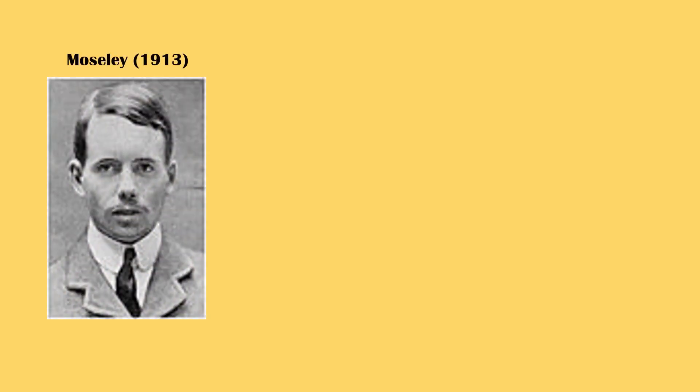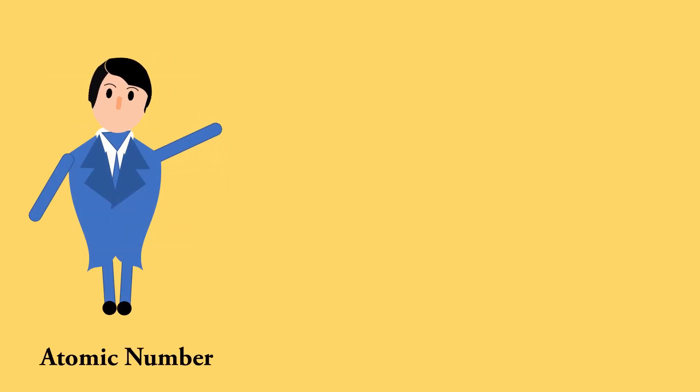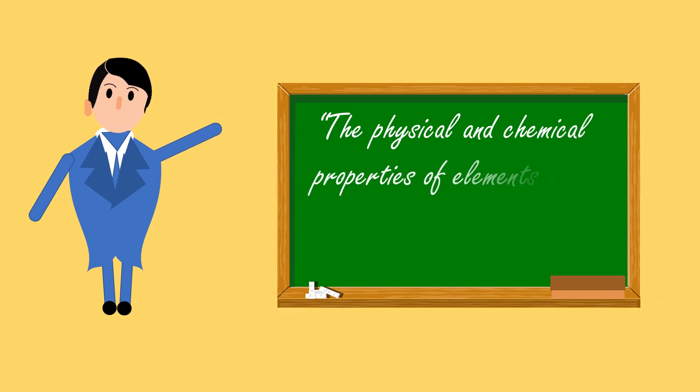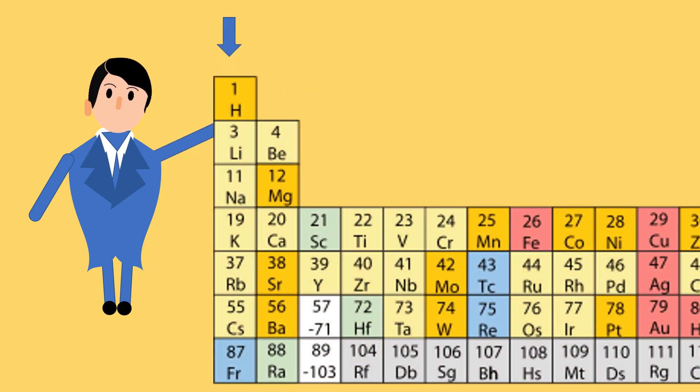Henry Moseley in 1913 put forward the periodic table which was based on the atomic number instead of the atomic mass. He states, the physical and chemical properties of elements are the periodic function of the atomic number. What this means is, the physical and chemical properties of elements are repetitive after a certain atomic number. So, the elements in a certain group will have similar kind of physical and chemical properties.